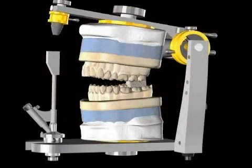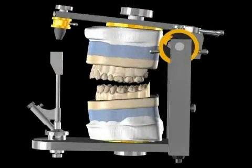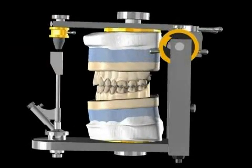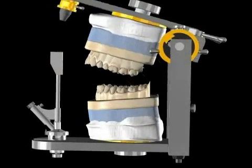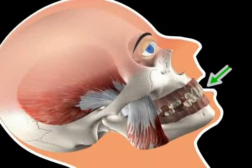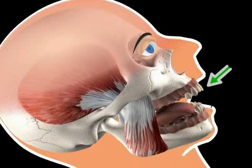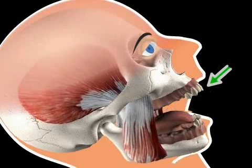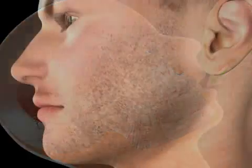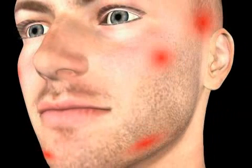Thus, a bite analysis only makes sense if there's a lack of reference points — for example, in the case of a severely reduced bite or a toothless patient. It's very rare that a new bite is sought in patients with a full set of teeth, such as those with facial and/or jaw joint disorders. For such purposes, the remaining teeth must be cut to accommodate the new bite situation.